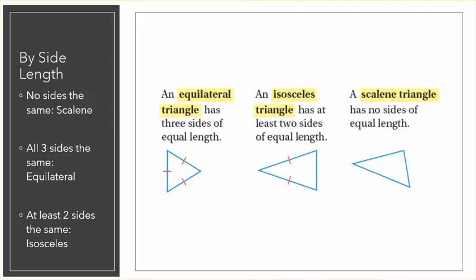Let's start by classifying triangles by the length of their sides. If no sides are the same, it's called scalene. If all three sides are the same, the triangle is equilateral. And if at least two sides are the same, it's isosceles.